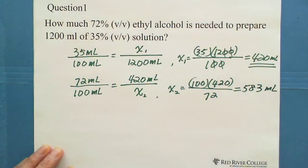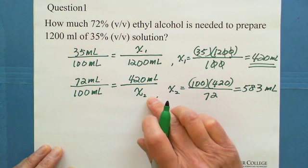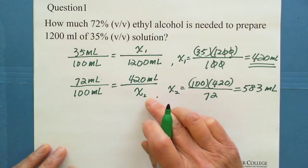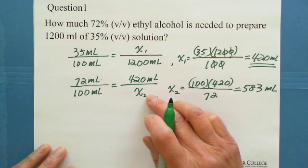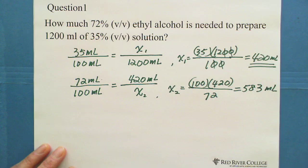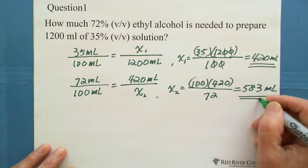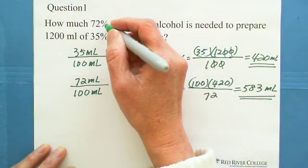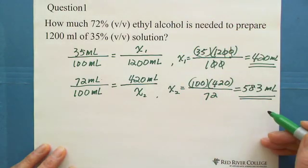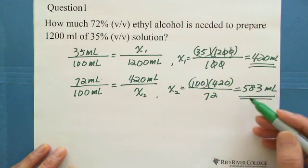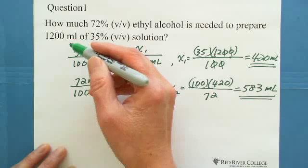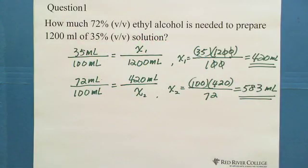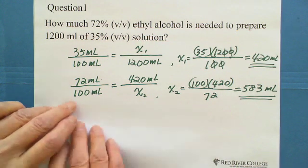That means we need 583 milliliters of this solution. What kind of solution? 72% solution. So 583 milliliters of 72% alcohol is needed to prepare 1200 milliliters of 35% solution. This is the question word.